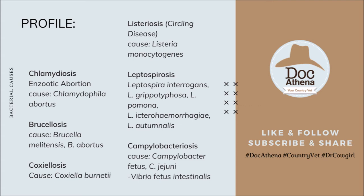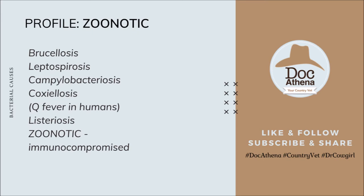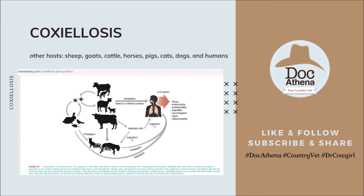Most of these bacteria are actually zoonotic. These include brucellosis, leptospirosis, campylobacteriosis, coxiellosis — which is called Q fever in humans — and listeriosis, especially dangerous to immunocompromised patients. Here is a diagram showing how coxiellosis infects humans. Coxiella can be found in many different species, including livestock, pets, wildlife, and even insects.